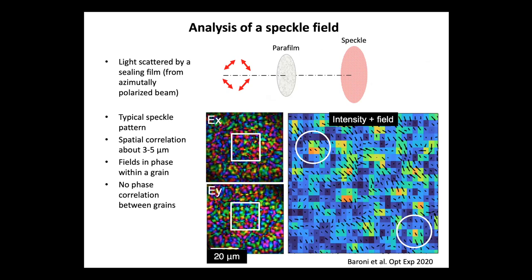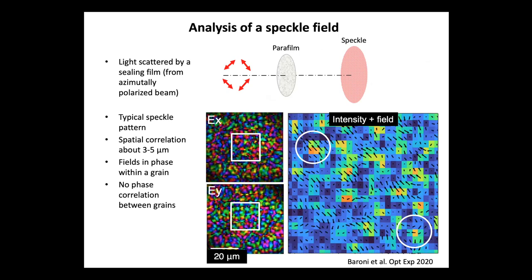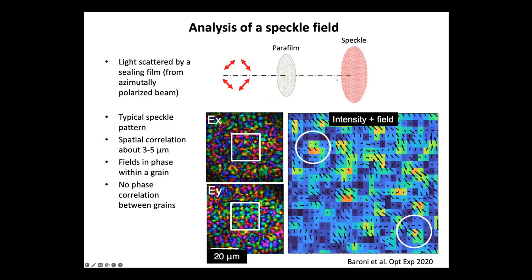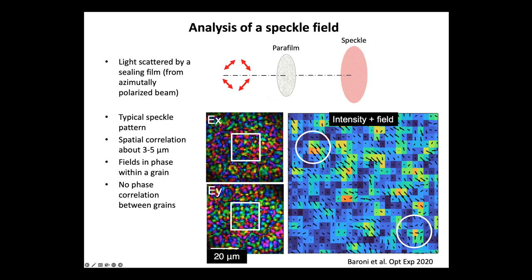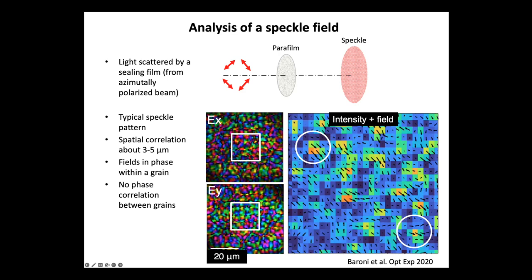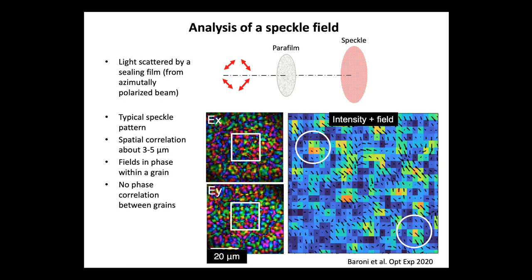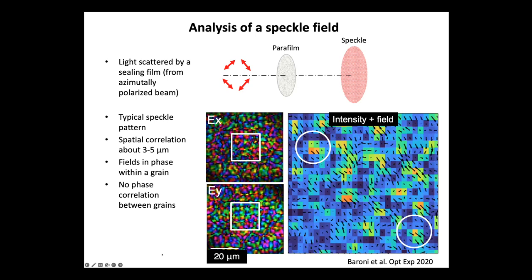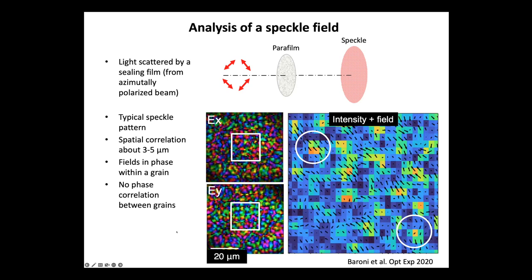It is also possible to analyze completely arbitrary beams. Here, this is a speckle made by using a scattering film. We get a speckle, and the image shows grains of light. As expected, the state of polarization is the same within any grain of light — something expected by theory — and there is no phase correlation between grains, which is the characteristic of a speckle.